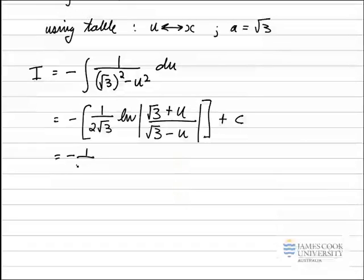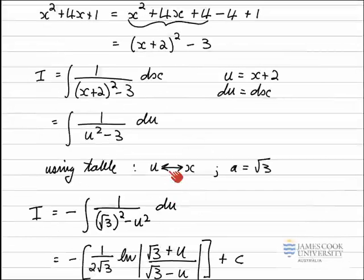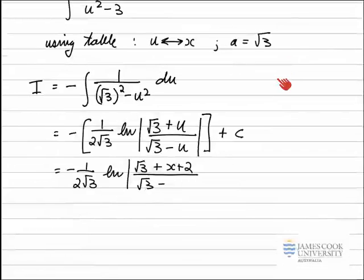Minus 1 divided by 2 root 3, log of — substituting in u = x plus 2 — root 3 plus x plus 2, all divided by the square root of 3 minus, and be careful with the minuses now: the negative of x plus 2 means minus x and minus 2 as well, so minus x minus 2. And all of that is plus an arbitrary constant plus c.